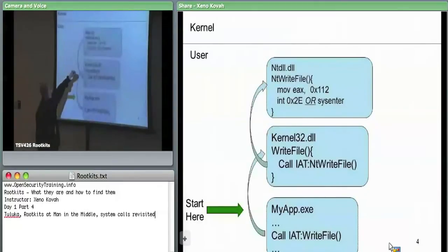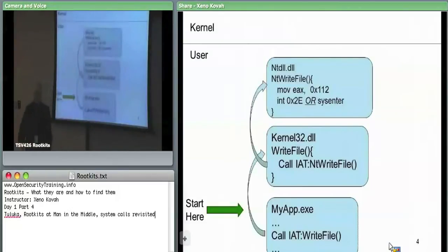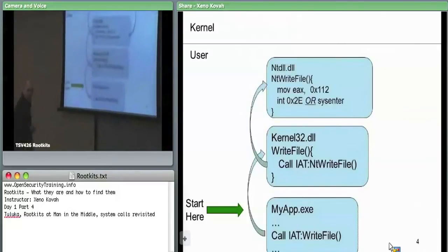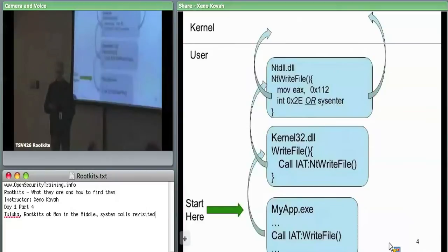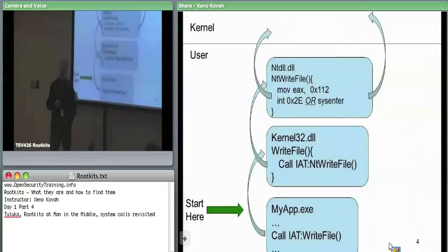The int2e or sysenter instructions are the actual instructions executed to make the transition into kernel space. Either you call interrupt 2E specifically — which was the Windows 2000 approach — or you use sysenter. You won't really see int2e used anymore; Windows stopped using it as of Windows 2000. Now they use the specific sysenter instruction.